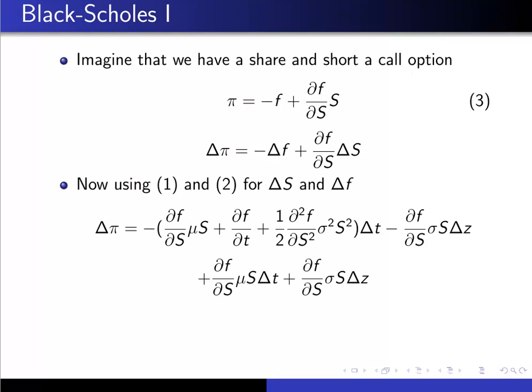So using one and two, we had our expressions for delta S and delta f. We just slot them in, so then we have delta π is this. Now the reason that we created this, that we had minus f plus df/dS shares, was to cancel the noise terms. So you can see this delta π, when we work it out, we have minus df/dS, we have minus df/dS σS here, we have plus df/dS σ here, so these two terms cancel.